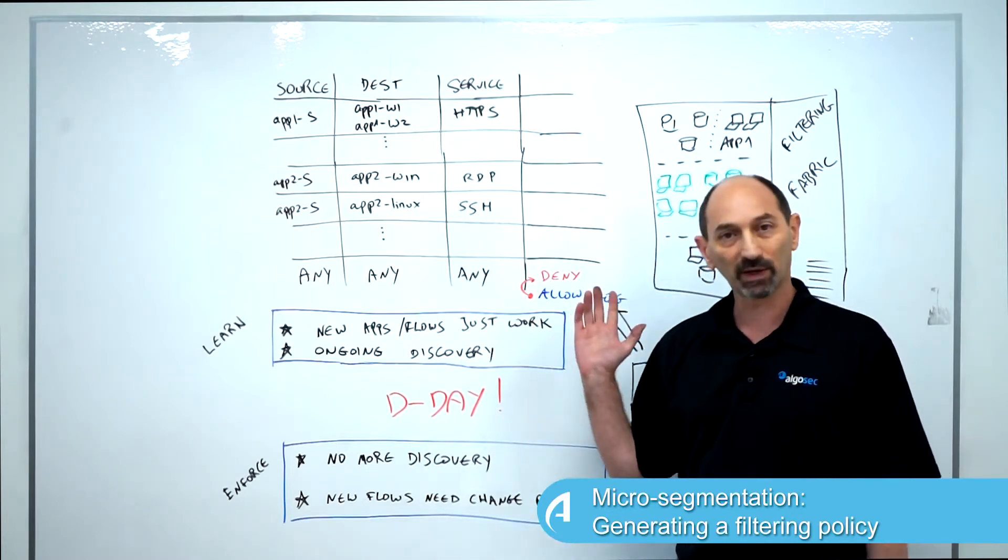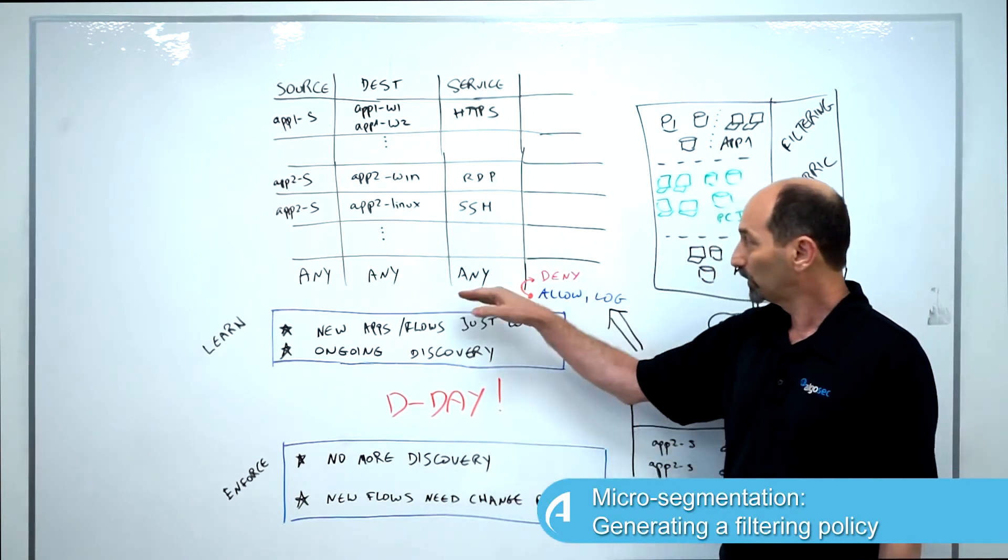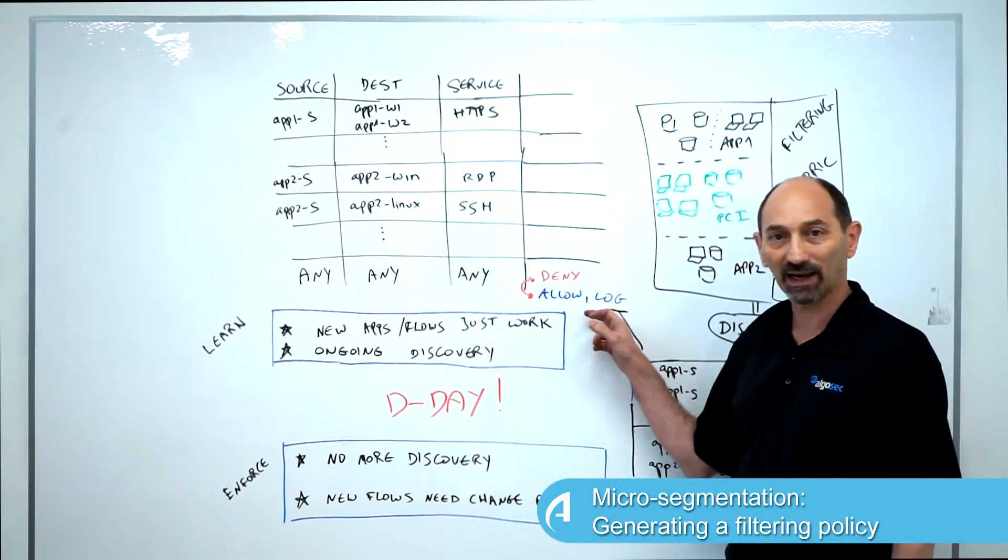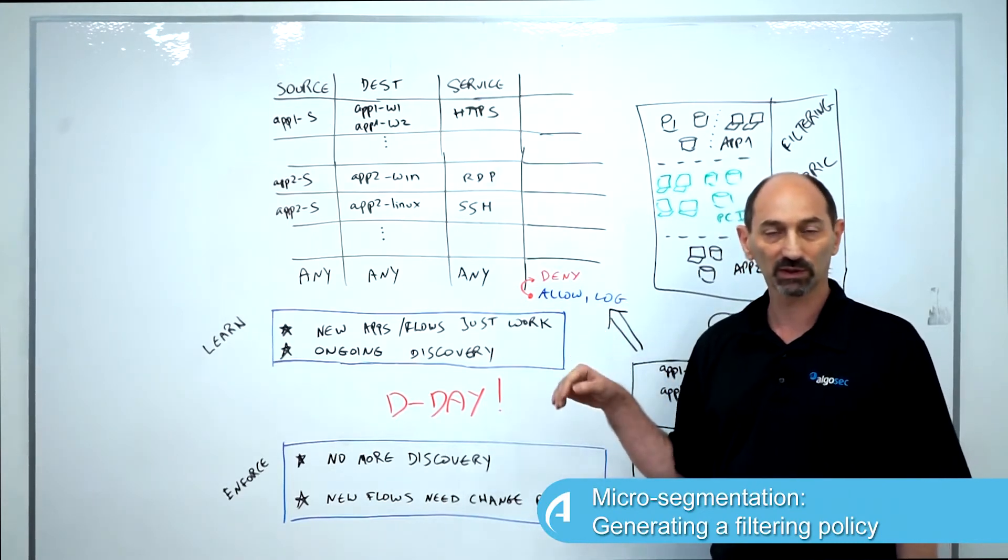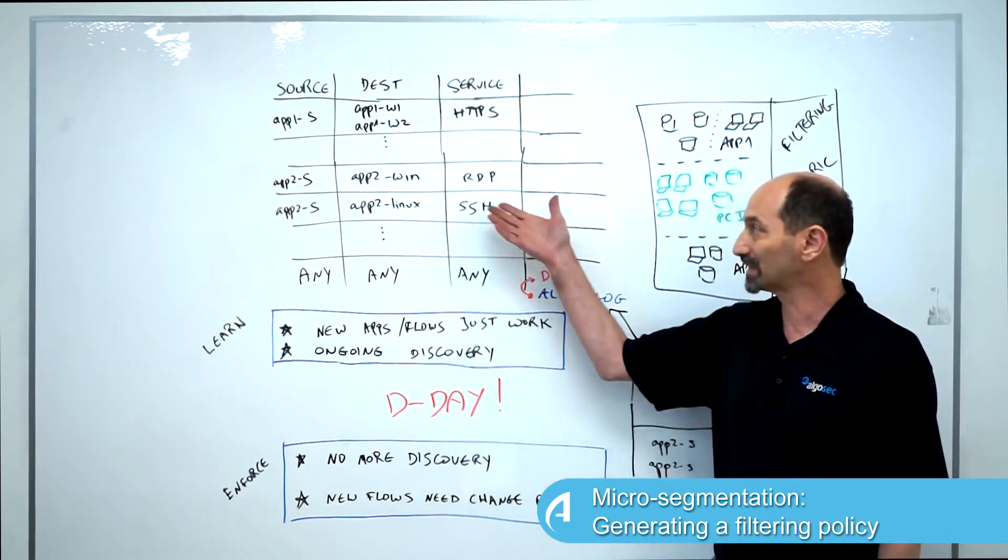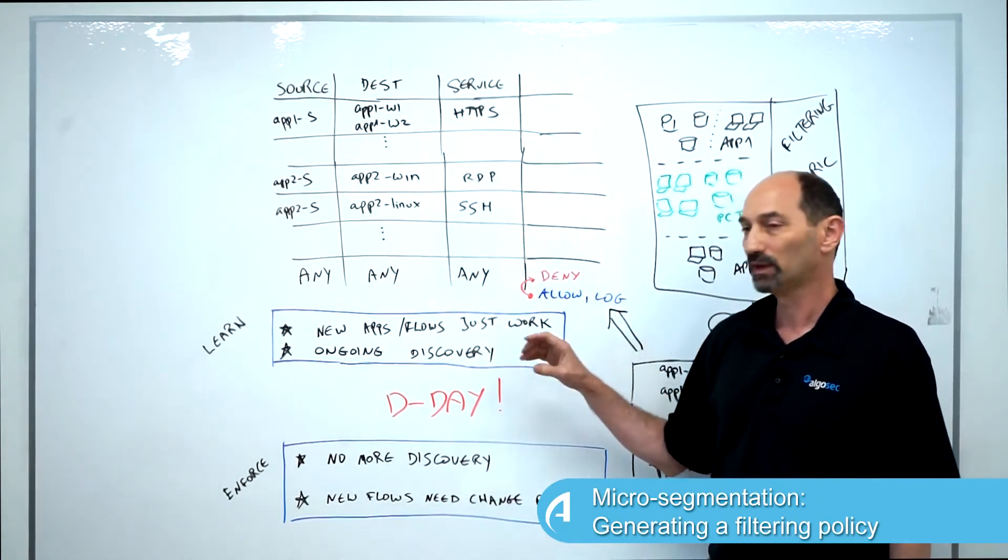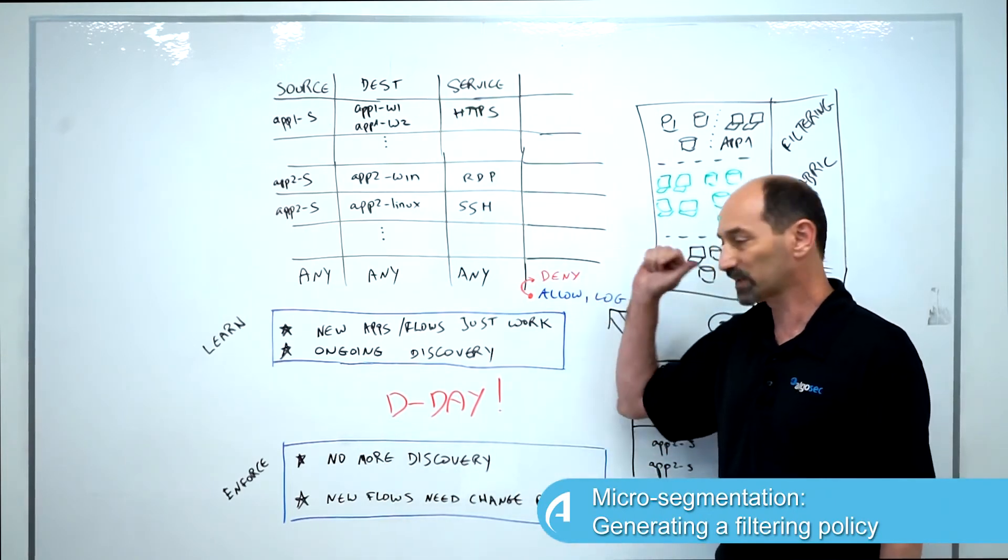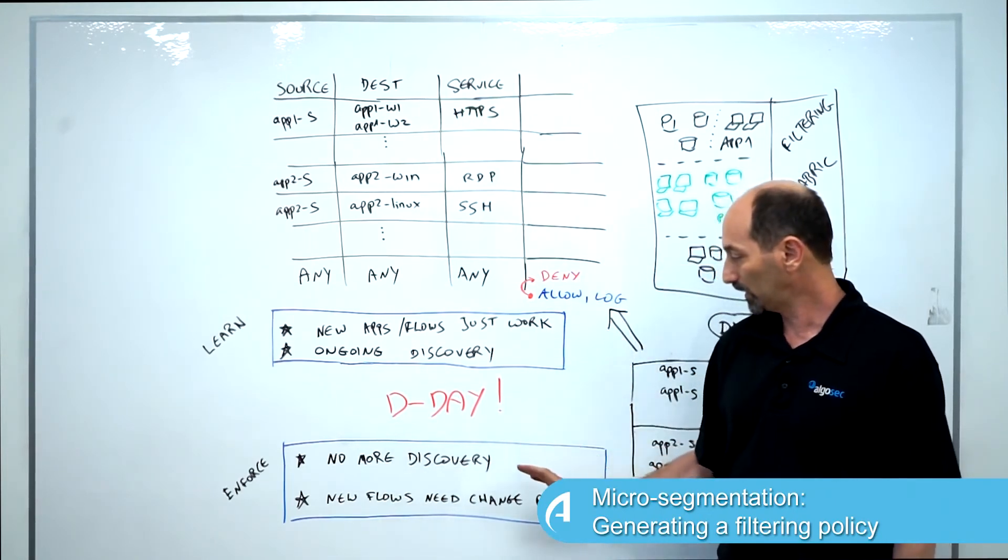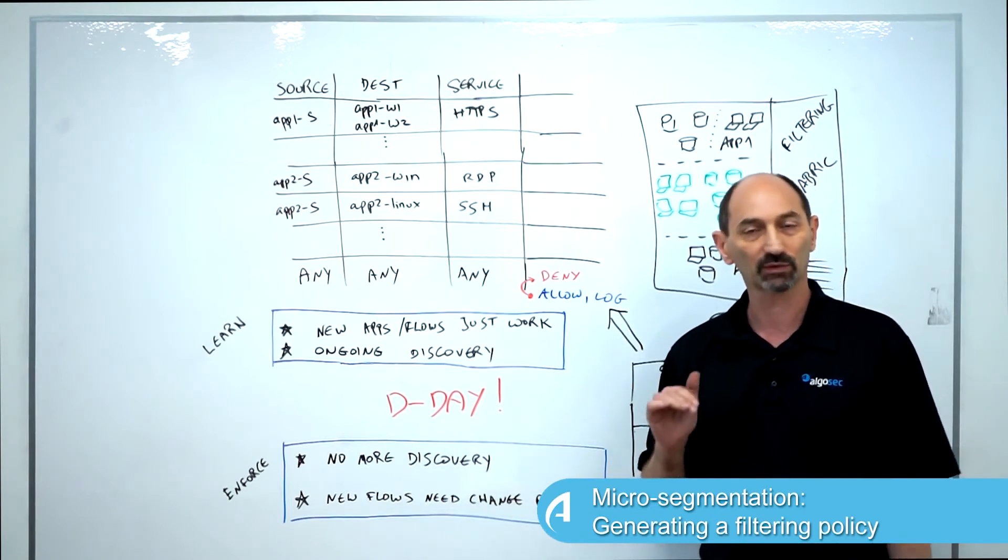So when you're thinking about your project, think about it this way. Prepare for D-Day by putting in an allow rule and monitor that log information to discover if you've reached a stable state and you have enough information. Once you're stable, then you've reached D-Day, you let everybody know, you flip the switch, and now you're in a new mode of operation in which you are actually protected from lateral movement.